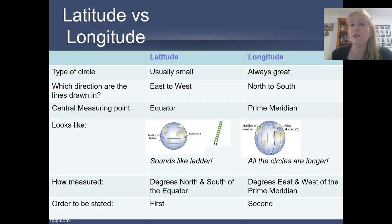So let's have a quick look at the information that's on here. First we've got latitude versus longitude. So usually our circles for latitude are small whereas longitude is always great. Our latitude lines are drawn in the directions from east to west around the Earth. However we measure them in degrees north and south of the equator.